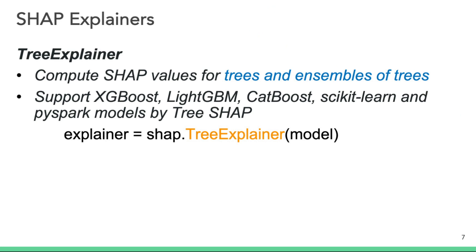Note that there are different implementations of SHAP optimized for different use cases. Tree Explainer computes the SHAP values for tree-based models such as decision trees, random forest, LightGBM, etc. This code snippet shows how simple it is to call Tree Explainer — you just pass in your tree-based model, and that's it. You establish an explainer object that you're able to use for your analysis.